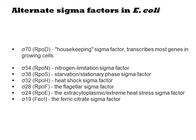Sigma-70 regulates most central dogma genes, and the others are specific to other processes. For example, sigma-28-dependent promoters all control genes associated with biosynthesizing flagella. Other prokaryotes have more sigma-factors than E. coli, or just a different set of orthologues.